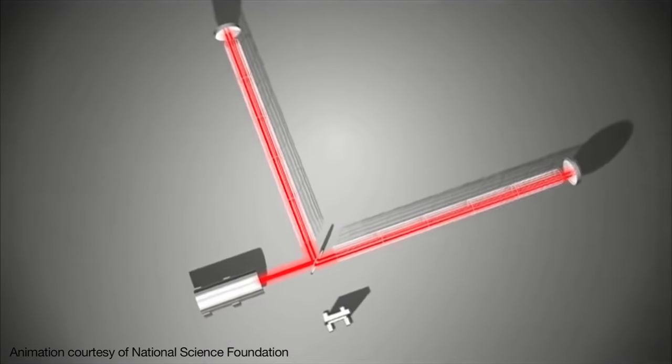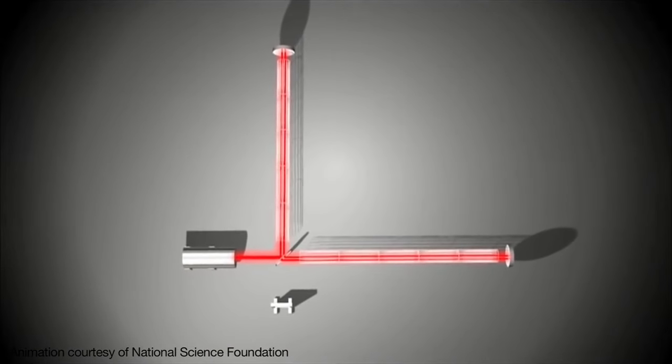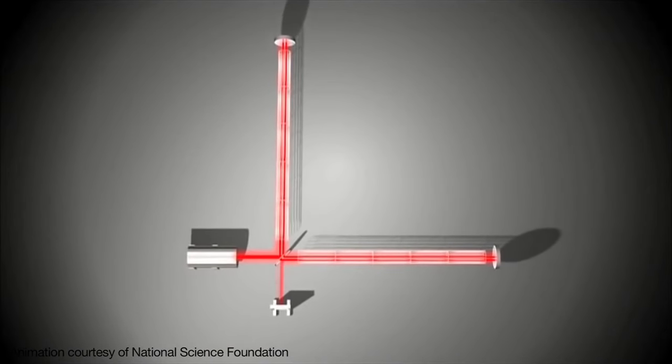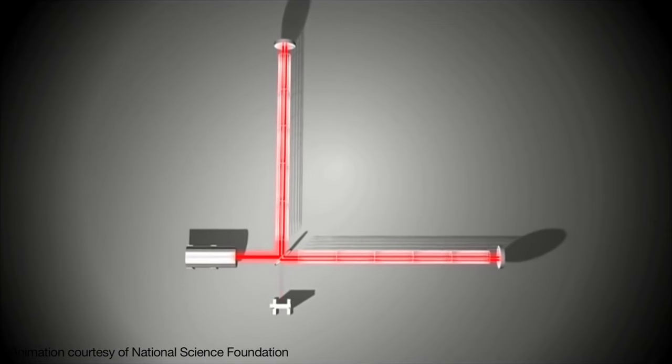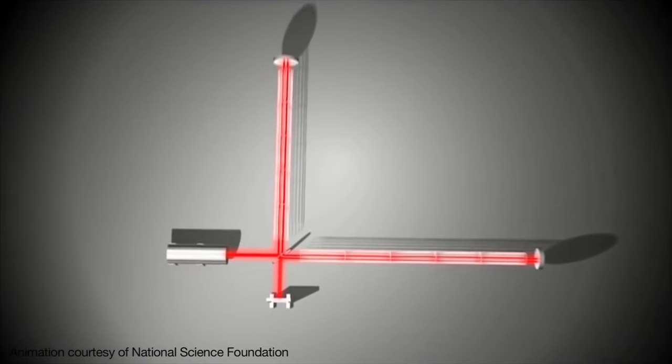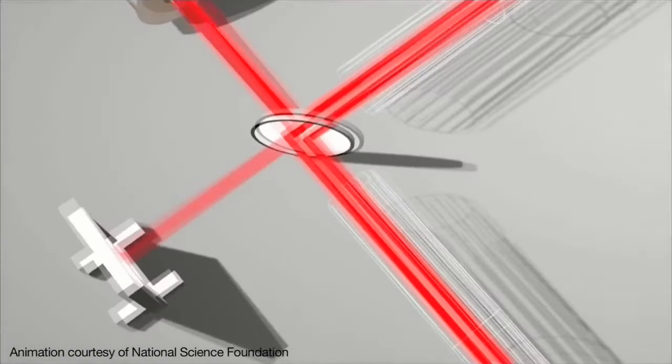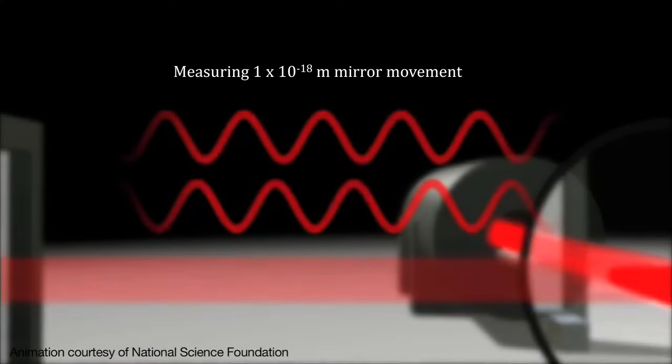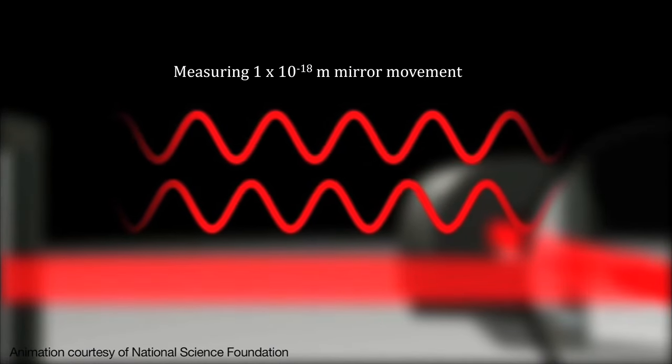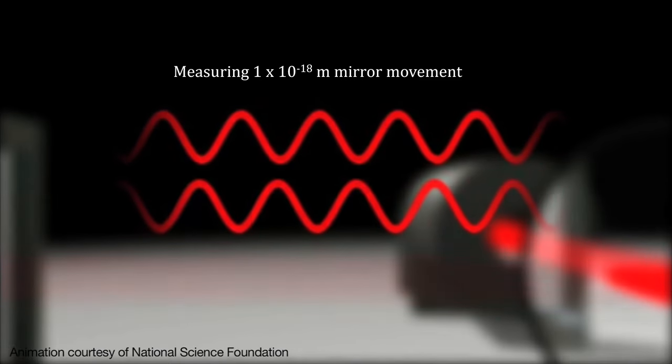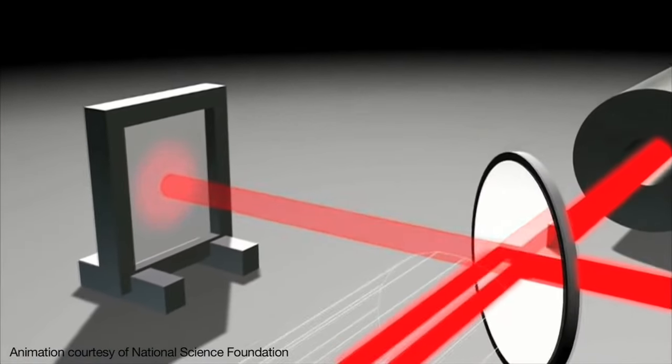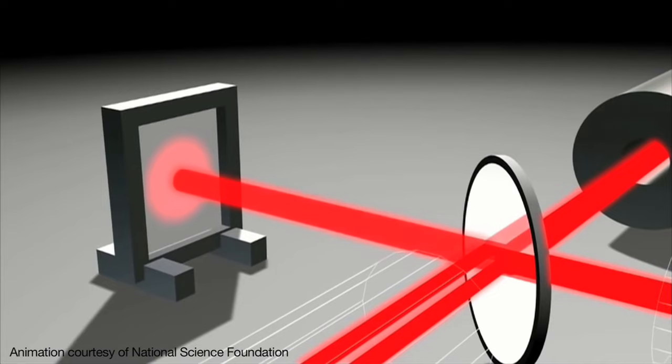When a gravitational wave passes through the interferometer, the distance along the arms of the interferometer are shortened and lengthened, causing the beams to become slightly out of sync. Hence, some light arrives at the photodetector, indicating a signal. Given LIGO's extra 280 passes through the tube, a gravitational wave strain amplitude of 10 to the minus 21 would displace the mirrors by 10 to the minus 18th meters. That's one-thousandth the diameter of a proton.